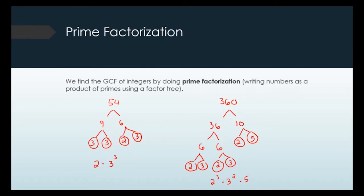To find the GCF, highlight everything in common between the two prime factorizations. There's a 2 in common, then a 3 and 3 in common, and another 3 and 3 in common. They don't have anything else in common. So you take everything that was shared — 2 times 3 times 3 — that's 6 times 3, which is 18. The greatest common factor of 54 and 360 is 18.